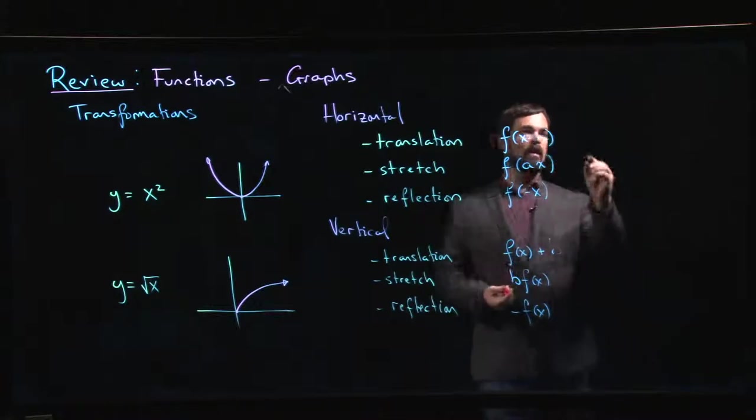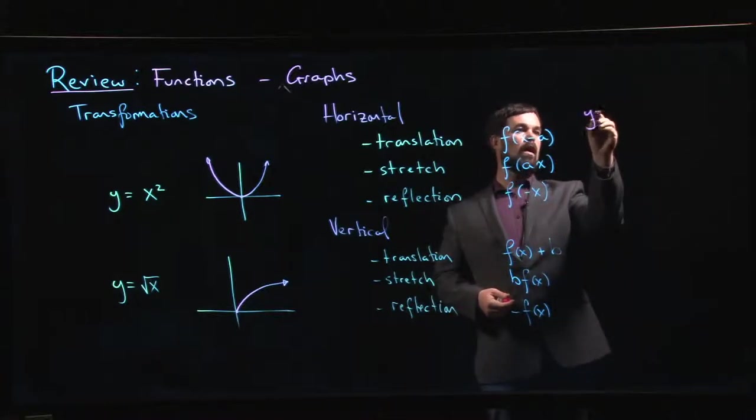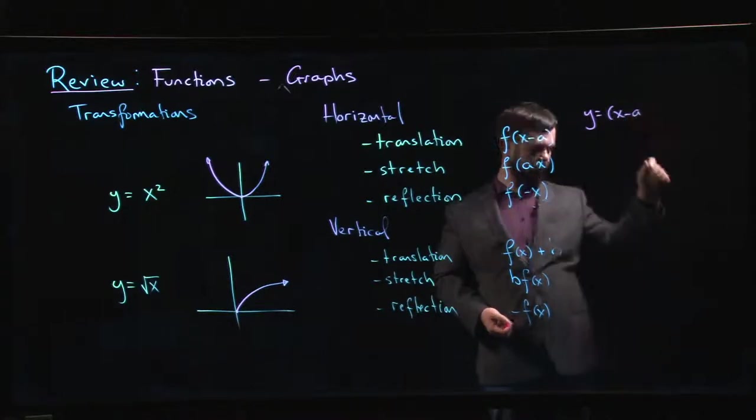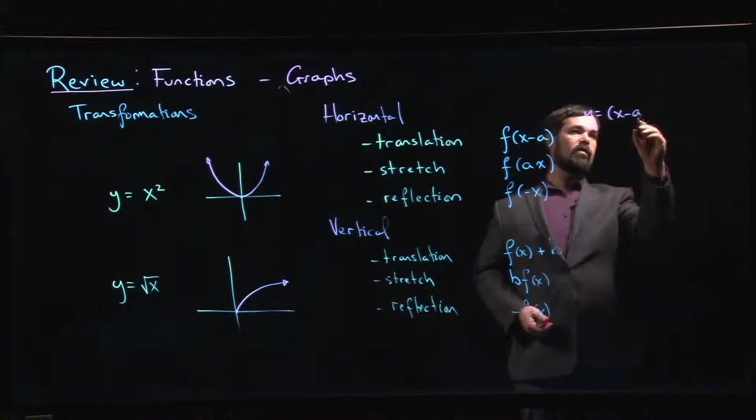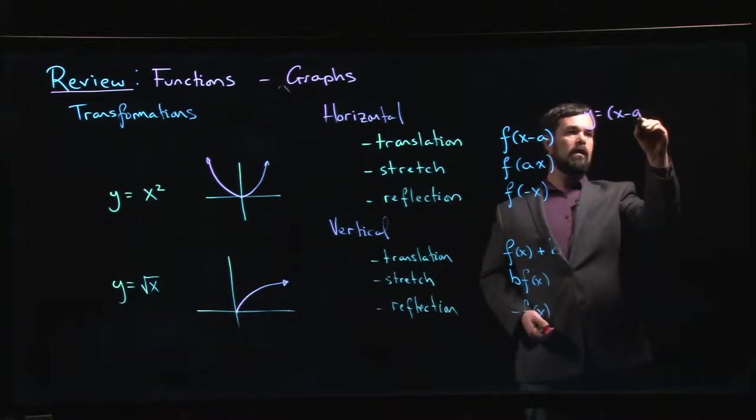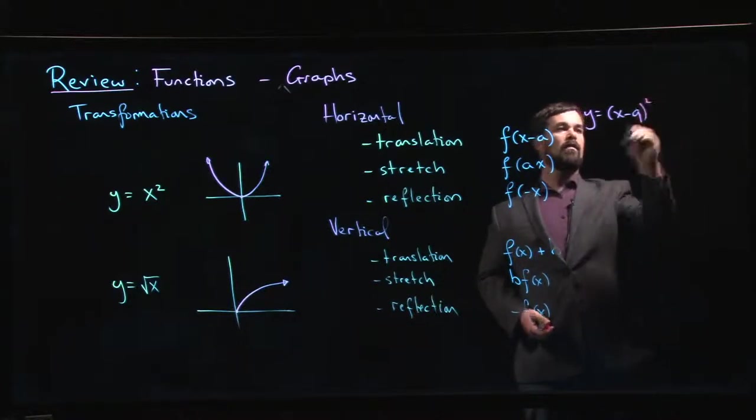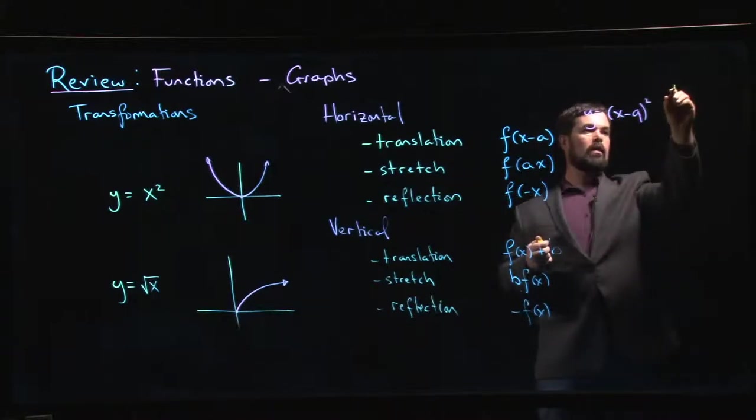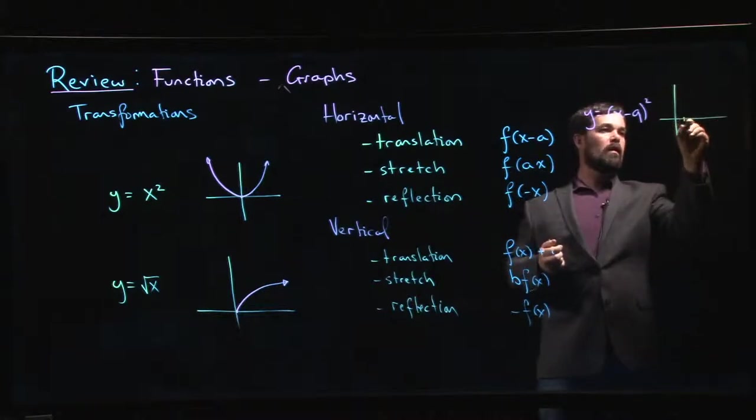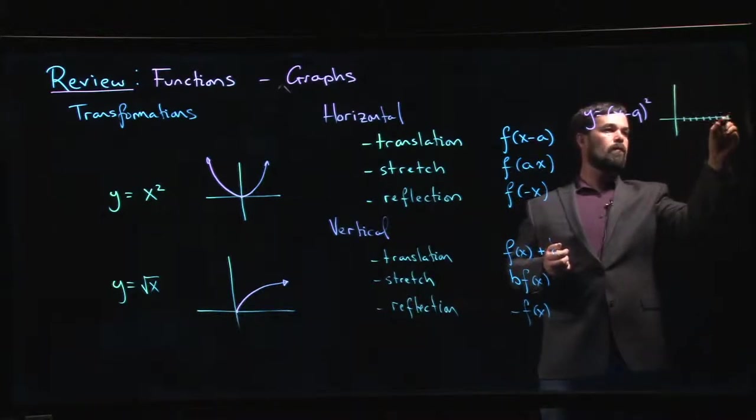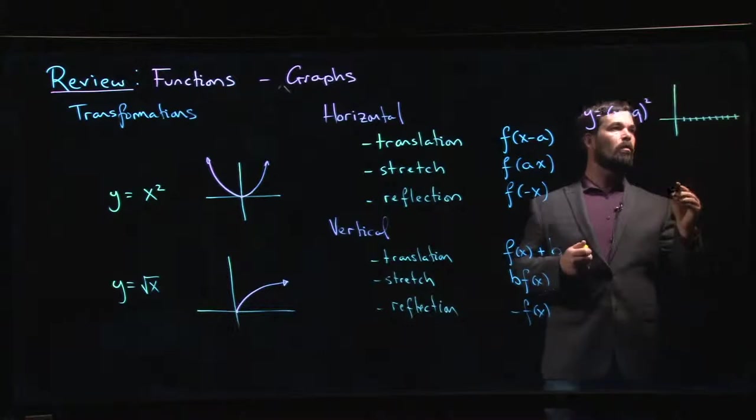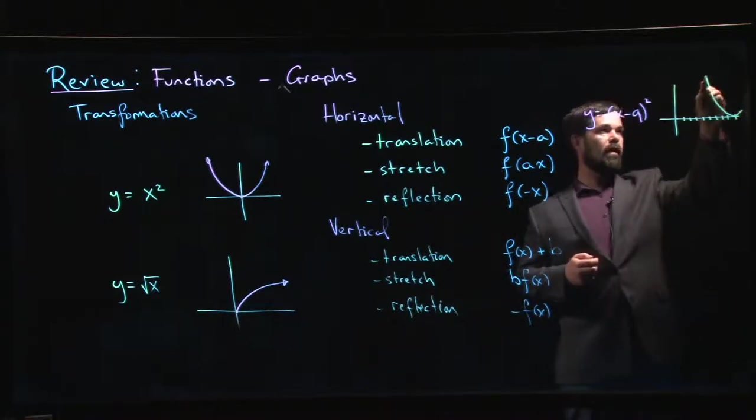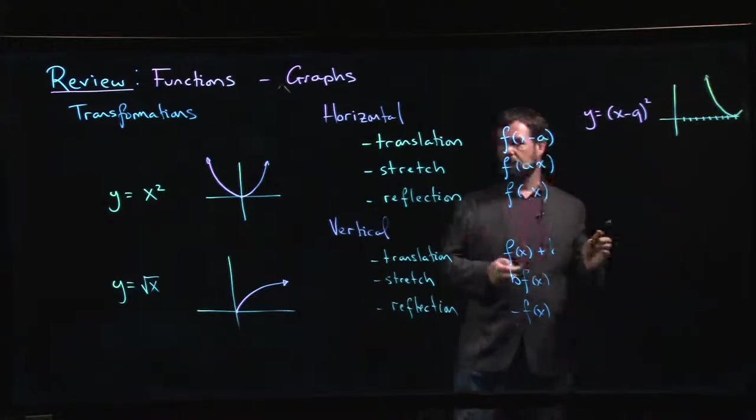So for example, if I did something like y equals (x minus 9) squared and I plotted that, what I would do is I would take my usual parabola and I would go nine units out and I would draw the graph there going off the screen. You just take the usual graph and you slide it over.